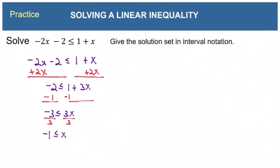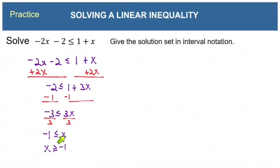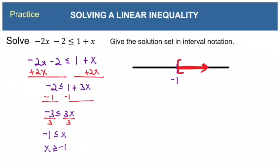That gives us negative 1 is less than or equal to x. Notice again x is on the right — we always rewrite so x is on the left. Restating: x is greater than or equal to negative 1, keeping the wide end of the symbol oriented toward the same expression so the meaning doesn't change. On the number line, the greater-than numbers are to the right of negative 1, and the or-equal-to means a bracket. The interval is from negative 1 to infinity.